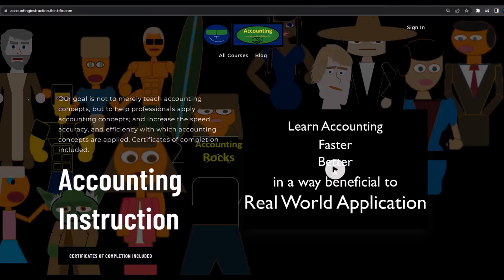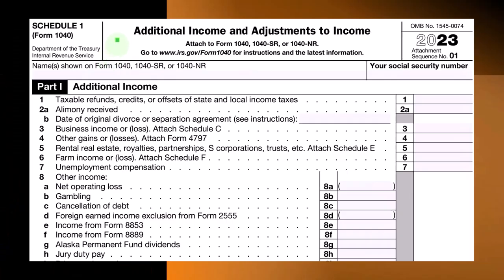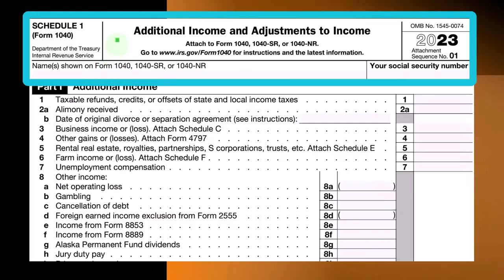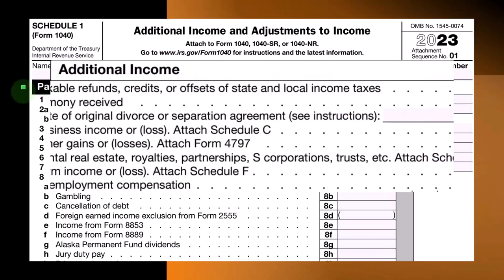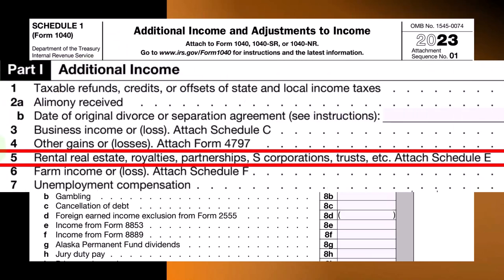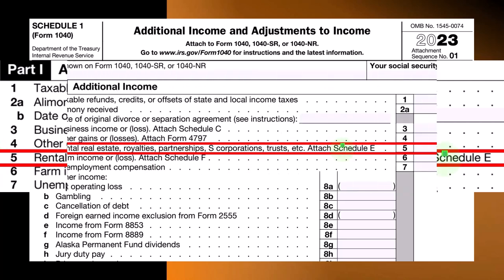If you would like a commercial-free experience, consider subscribing at accountinginstruction.com or accountinginstruction.thinkific.com. This is Schedule 1, Additional Income and Adjustments to Income, Part 1, Additional Income — with Schedule E rolling into Line 5, Rental Real Estate, from Schedule E.